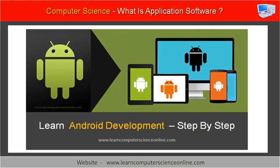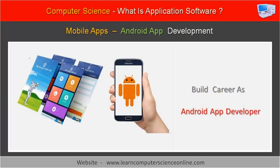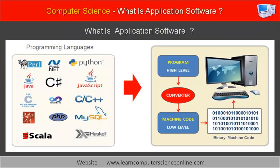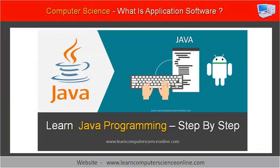Mobile applications are another category of application software that are specially designed for mobile devices. These applications are popularly called Android apps. Application programs are designed and developed using any high-level programming language such as C++, Java, Python, or any other suitable programming language. Mobile apps can also be developed using different programming languages, depending upon the operating system and the platform, such as Android or iOS-based Apple devices.